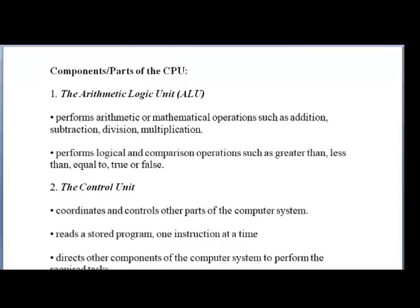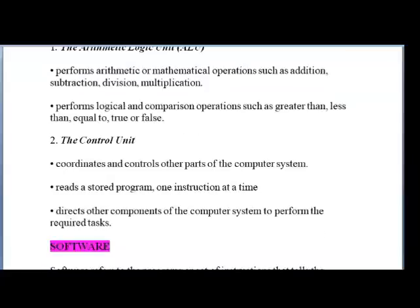When we input data into the computer through input devices, it goes to the CPU where the data or instructions are processed, and from there we get output through the output devices or it is sent to storage devices. The CPU has two main parts: the ALU (Arithmetic Logic Unit) and the control unit. The ALU deals with all arithmetic or mathematical operations — addition, subtraction, division, multiplication — and also logic operations such as greater than, less than, equal to, true or false. The control unit coordinates and controls other parts of the computer system, reads stored programs one instruction at a time, and directs other components to perform required tasks.